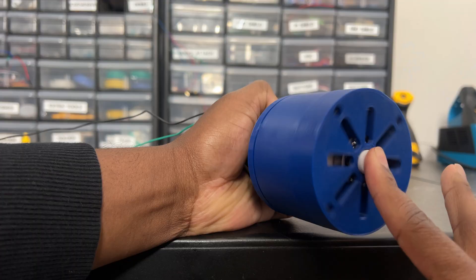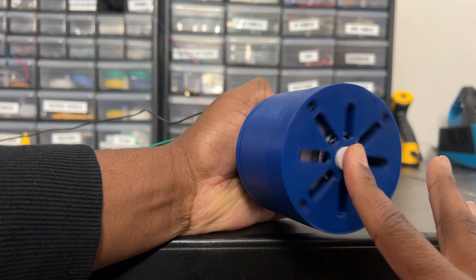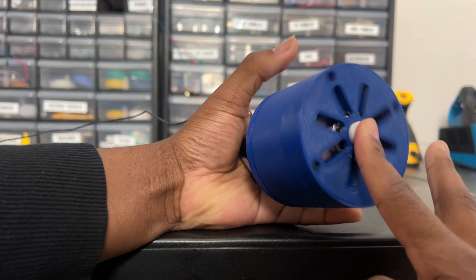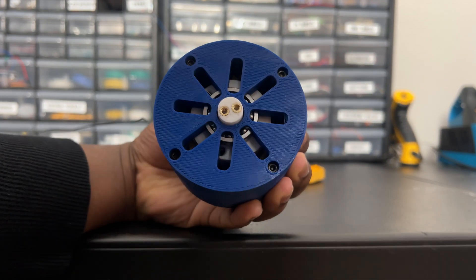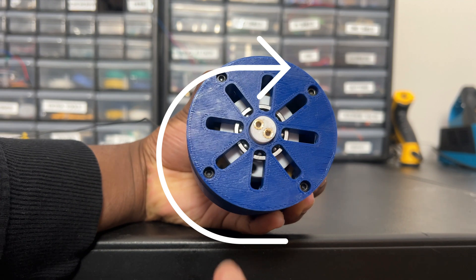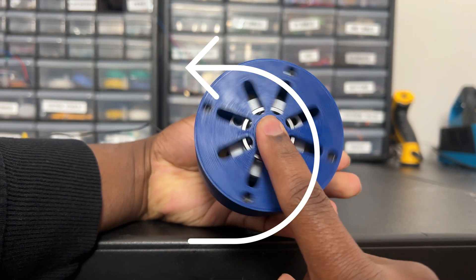But the cool thing about planetary gearboxes is that you can change the gear ratio based on what's moving and what's not moving. For example, if we keep the planet carrier stationary, the ring gear becomes our output and always moves in the opposite direction of our sun gear.